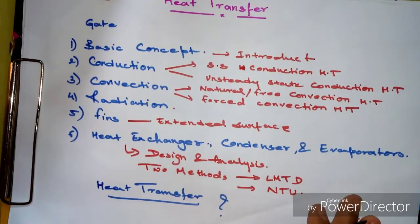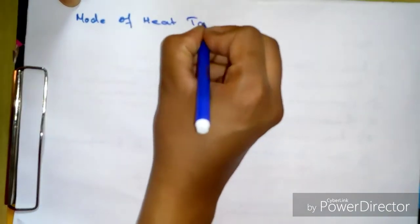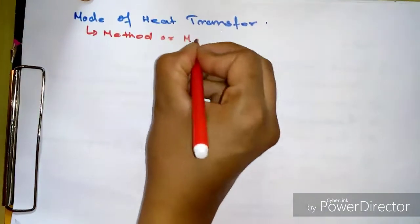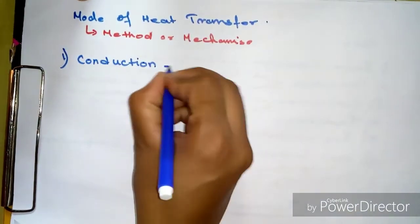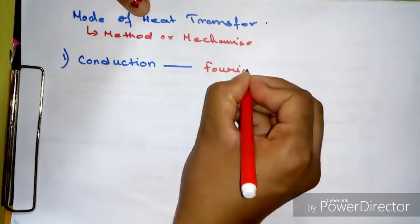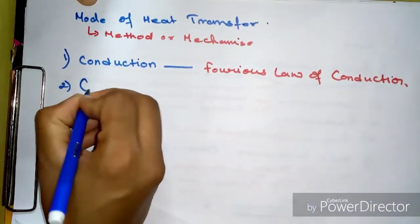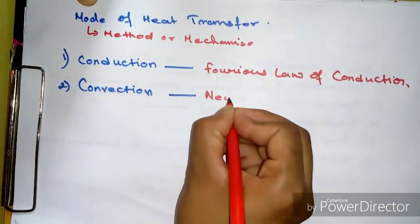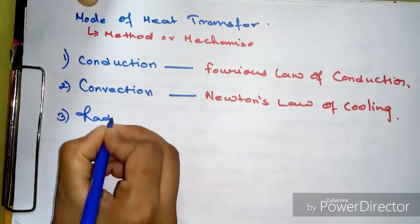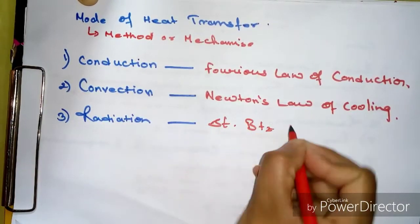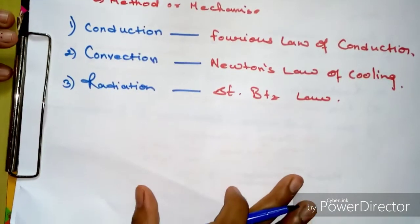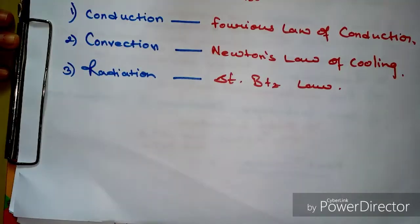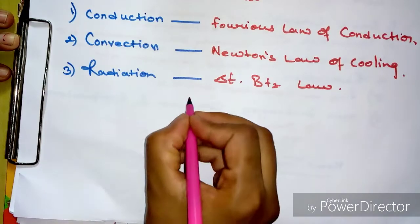Mode means the method or mechanism of heat transfer — how heat transfer takes place. There are three modes: conduction, convection, and radiation. Their respective laws are: Fourier's law of conduction for conduction, Newton's law of cooling for convection, and the Stefan-Boltzmann law for radiation.